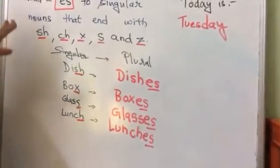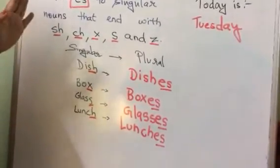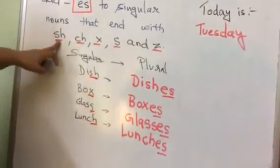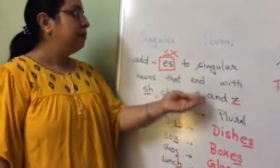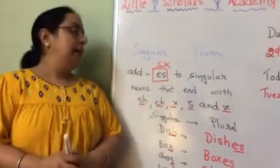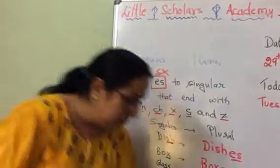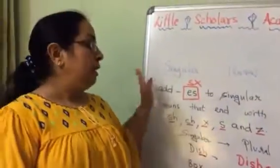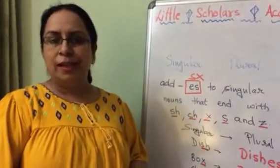All right, so this is a different rule. Har ek ko hum s karke change nahi karte hai. Sirf yeh jo hai, ending agar aise hoti hai — s-h se end hota hai noun, ya c-h se, x se, s se, aur z se — toh hum unko plural mein change karenge by putting e-s. So I will send you a work based on this, so that humko yeh jo new thing humne learn karhi hai, iski aur achhe se understanding ho jayegi.